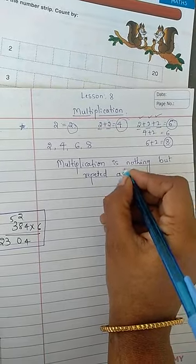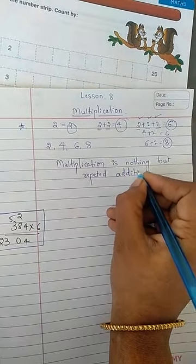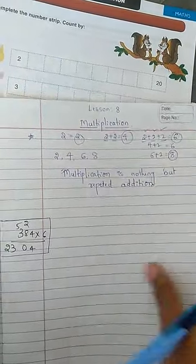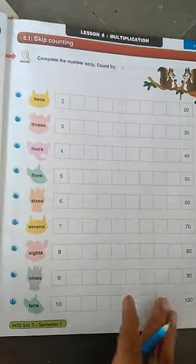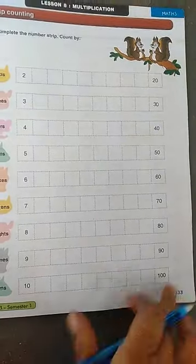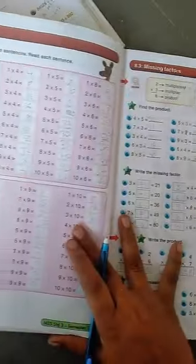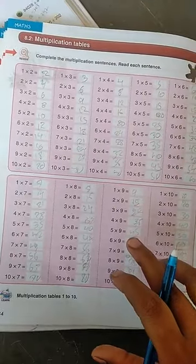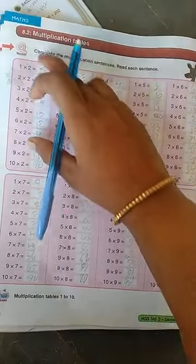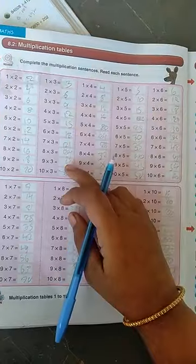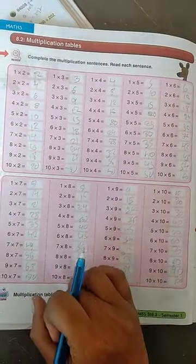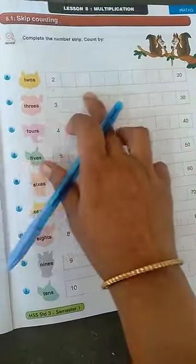We can say if you are adding repeatedly that will give you multiplication. See children in the page number 133 and first page and second page of multiplication they have given for you to write the tables. They have given just space here just write. See this, last year students they have written the textbook I am using here.